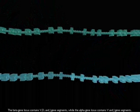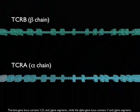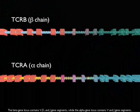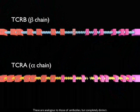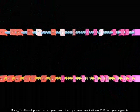The beta gene locus contains V, D, and J gene segments, while the alpha gene locus contains V and J gene segments. These are analogous to those of antibodies, but completely distinct.